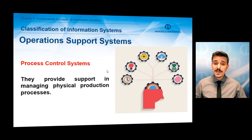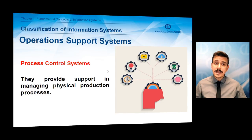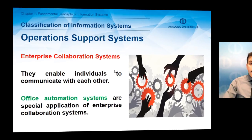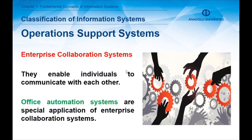Process control systems provide support in managing physical production processes — they fundamentally support the operations of employees and businesses in the production phase. Enterprise collaboration system is another type of operational support system. They enable individuals to communicate with each other and enable communication among employees, managers, and other stakeholders within or outside the business. A special type is office automation systems, with examples including emails, fax machines, video conferencing, audio conferencing, and electronic calendars.